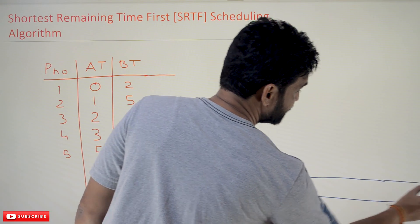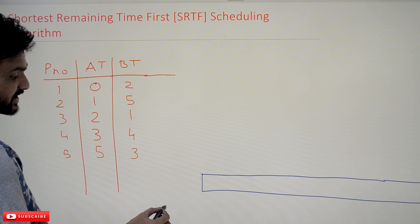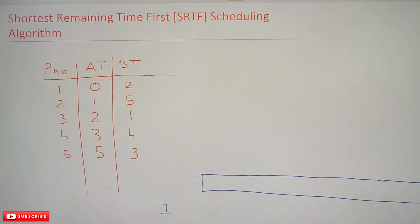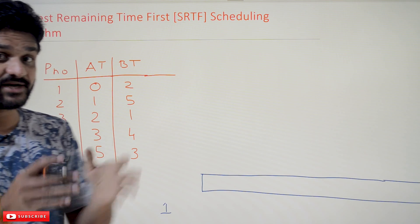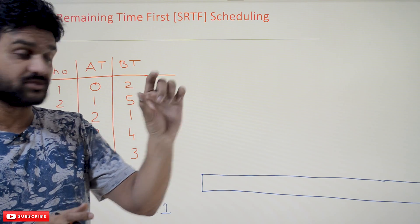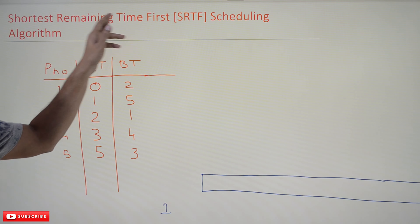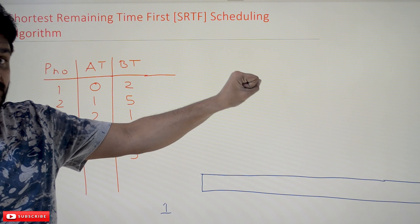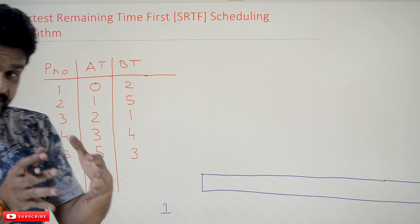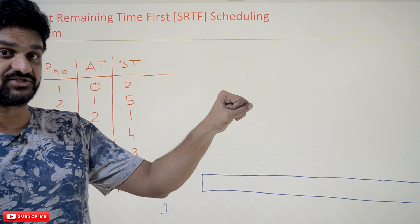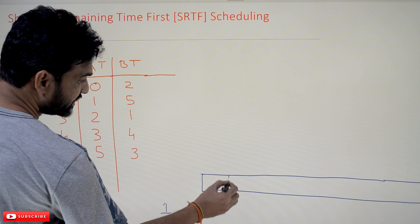Since this is a preemptive algorithm, for every time quantum a new process will move from ready state to running state. Here we will assume that the time quantum is one unit of time. For every one unit of time we are going to fetch a new process, and the fetching of that new process is done based upon the shortest remaining time. So for every time quantum, after the end of every time quantum, a new process has to be fetched using shortest remaining time.